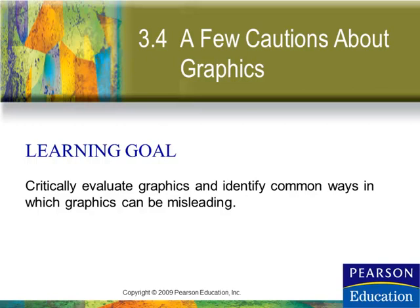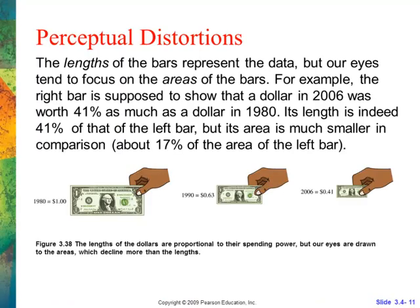In section 3.4 we look at how graphs can be misleading — usually in media, though it could be anywhere. USA Today is a big user of this. One issue is having a two-dimensional space represent a one-dimensional change. While the change in the length of a dollar bill is only half, they're actually changing the area proportionally — so the smaller dollar bill is really a quarter the size. We're misrepresenting what's being shown. If we shrink the length, that's all we should shrink — like in Excel, where making a bar longer or shorter doesn't change its width.